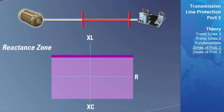For example, if an impedance zone detected the impedance of the line entering its zone of protection due to an external fault, the reactance zone can be used to block the impedance zone from tripping because it can determine that the impedance is mostly resistive and therefore the fault is not on the transmission line.